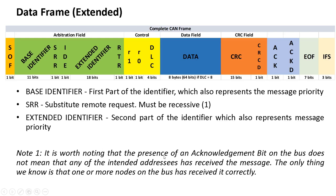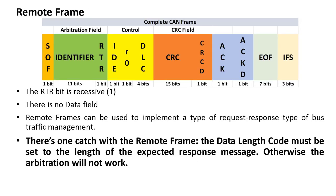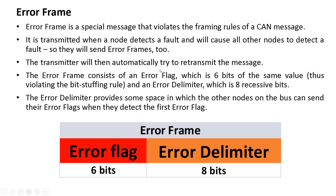The remote frame is used to request a message on the bus. To request a frame, you specify the identifier you want to receive, put a recessive bit in the RTR field, and — very importantly — the DLC must be of equal length to the expected response message, otherwise arbitration will not work and the node will not receive anything. You also need to have nodes configured to respond to remote frames.